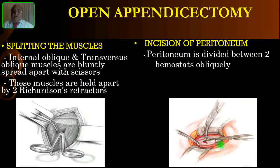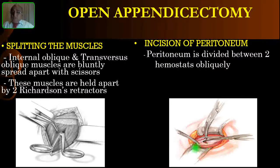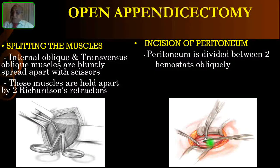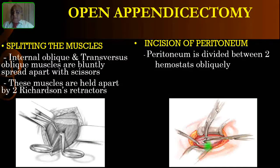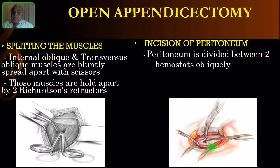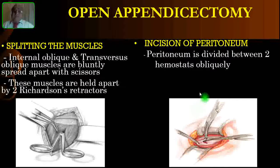After splitting the muscles, you will see the underlying peritoneum. Catch hold of the peritoneum with two hemostats one by one, then cut it open. Before cutting, pinch the area and make sure you are not catching either the underlying bowel or the omentum. Cut it with a knife obliquely. Immediately after opening the peritoneum, some fluid may come out — turbid fluid or whatever discharge is present. Take a swab and send it for culture and sensitivity.